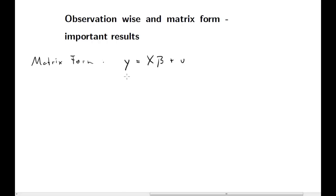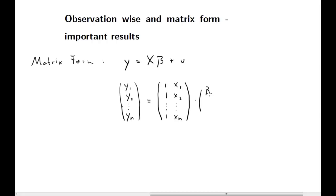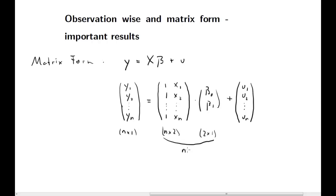We'll start with a regression model in matrix form: y equals X beta plus u, where y is an n-by-1 vector of dependent variables. X uses a simple case with a constant and one vector of explanatory variables, giving us two coefficients and a vector of error terms. The OLS parameter estimator for that model is (X'X) inverse X'Y.